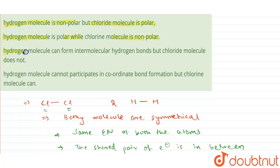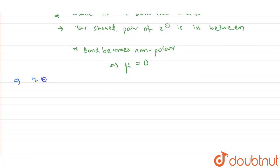The third statement given to us is that hydrogen molecule can form intermolecular hydrogen bonds but chloride molecule does not. This happens because first of all, hydrogen bonding is a special type of bond, a special type of dipole-dipole interaction, or you can say it is basically attraction.